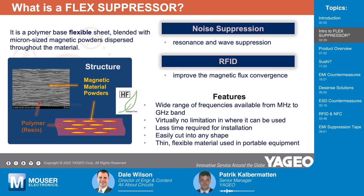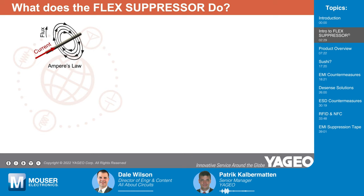You mentioned supporting a wide range of frequencies. Is that accomplished by changing the type of material or the density of those powders? That's a very good question I would like to cover in about two more slides. But first, I wanted to address the basic principle of what exactly the flex suppressor does — how it functions. When you have current going through a line, this will create a magnetic flux. And by using the flex suppressor, you have two characteristics of that material that are going to have an effect on this magnetic flux.